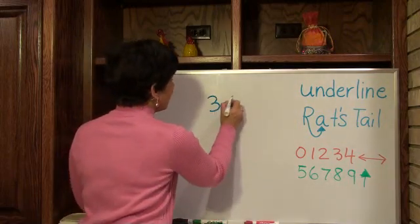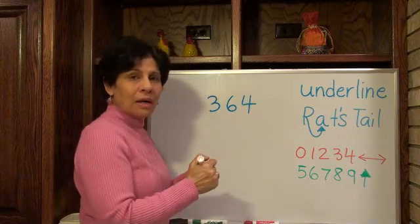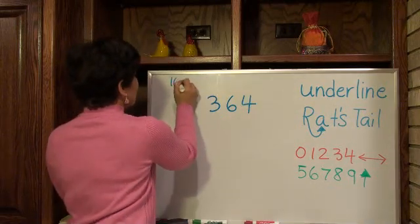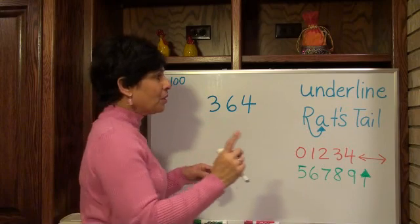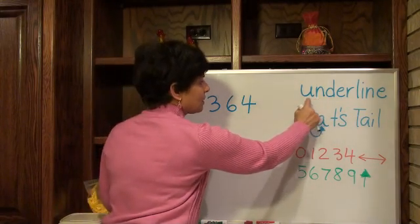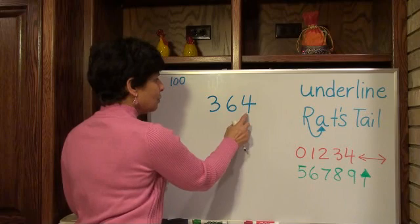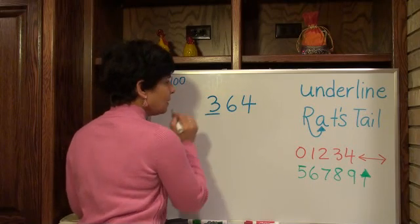Let's say our number is 364. I need to round it to the nearest hundred. First thing I want to do is underline what's in the hundreds place. What's in the hundreds place? Ones, tens, and hundreds.